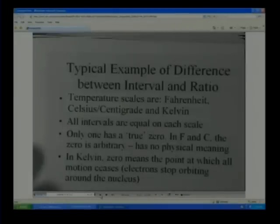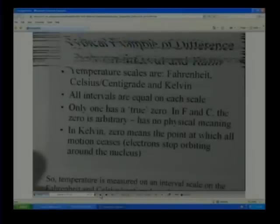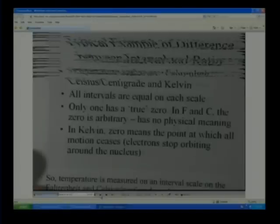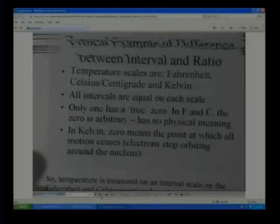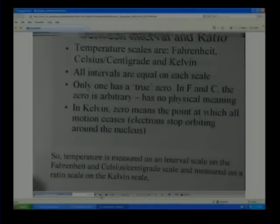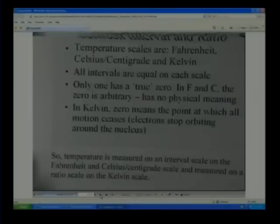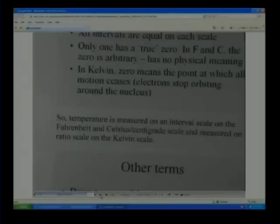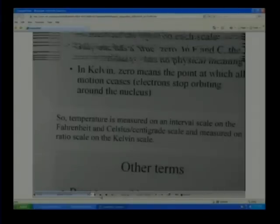But only one has a true zero. In the Fahrenheit and Celsius, the zero is arbitrary. I mean, on the Celsius, it's when water freezes. On the Fahrenheit, zero is even down below 32 degrees. It's really cold. So the zero is arbitrary. It doesn't have any physical meaning to us. But in Kelvin, then zero means the point at which all motion ceases. So it does have some physical meaning. I mean, everything stops there. That's just an example of the difference between interval and ratio. So temperature measured on the interval scale on the Fahrenheit and Celsius scale, and it's measured on the ratio scale on the Kelvin scale.